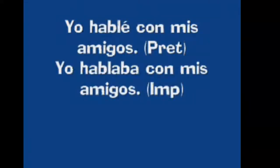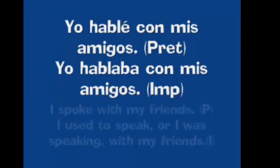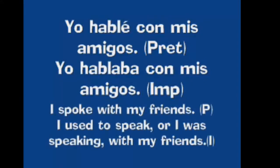Let's look at the imperfect actually being used. Here we have two sentences. 'Yo hablé con mis amigos' — I spoke with my friends — that's the preterite, a BAM moment with a defined beginning and end. With the imperfect we say 'yo hablaba con mis amigos' — still in the past, but something we used to do or that went on over time. For example: when I was young, yo hablaba con mis amigos todos los días.